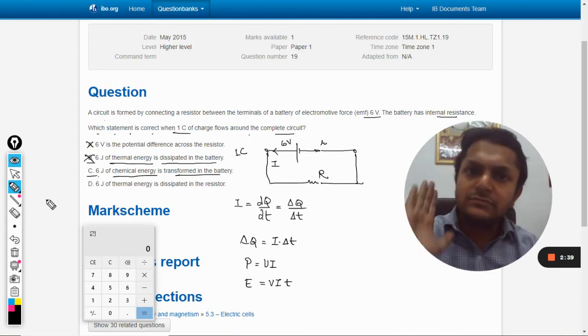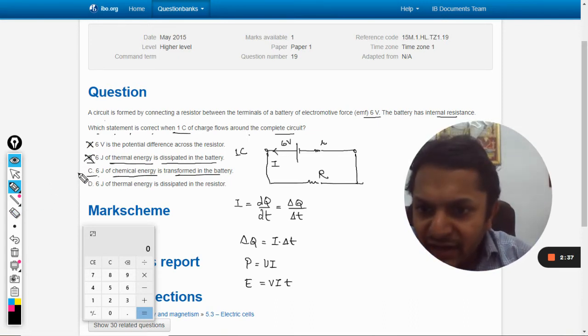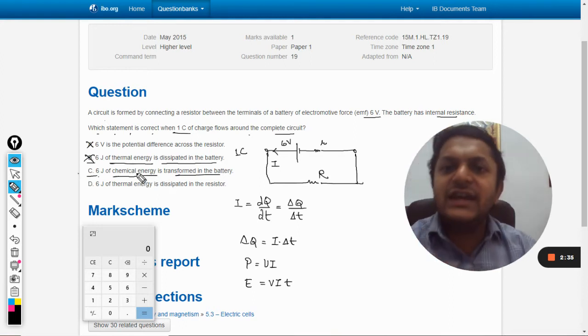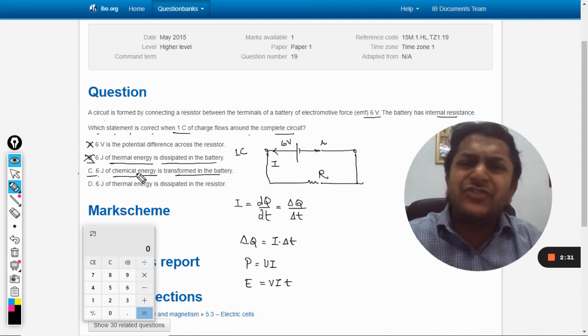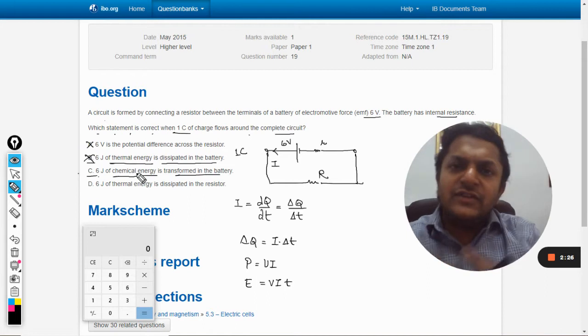The chemical battery, because it's a dry cell, so there is a chemical reaction going on there. So it's a chemical energy which is being converted into electrical energy. So this might be right.